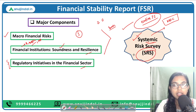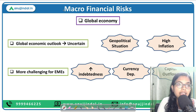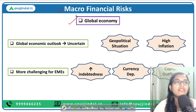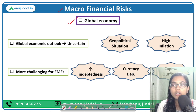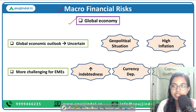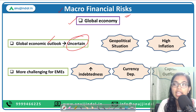Moving forward to the first major component — the macro financial risk — we will be talking about financial risk at the macro level: first at the global economy level and secondly at the domestic economy level. At the global economy level, due to the ongoing war in Ukraine as well as elevated commodity prices such as crude prices, disrupted supply chains, and darkening growth perspectives, the global economic outlook has been negative and uncertain.